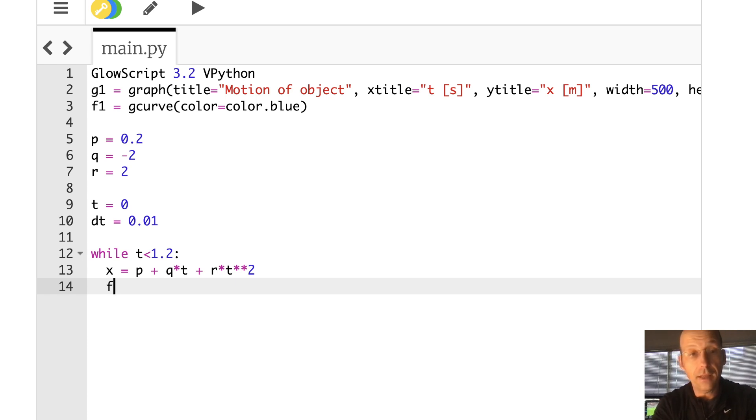Now I'm going to plot that. F1 dot plot T, X. And now I'm going to increase my value of T. T equals T plus DT. That's it. That's all I have to do to make this graph.